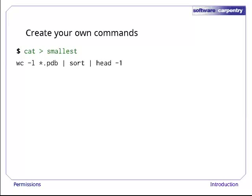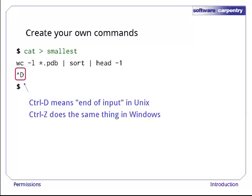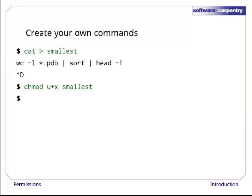After pressing enter to end the line, type Control-D. You should immediately get a new shell prompt. Control-D means end of input on Unix — it's how we tell cat, or any other program, that there's nothing more coming from the keyboard. The equivalent control character on Windows is Control-Z. Now that our commands are in the file, let's give ourselves the right to run that file as a program by typing chmod u+x smallest.